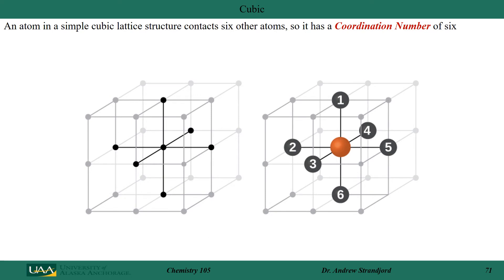Another term used in crystallography when describing the crystalline nature of solids is coordination number — that is the number of atoms that are in contact with each of the atoms in the cell. If we look at a cubic lattice structure, each atom is in contact with six different other atoms, so in a cubic crystalline material each atom would have a coordination number of six.